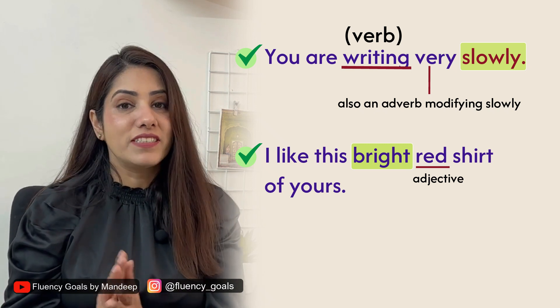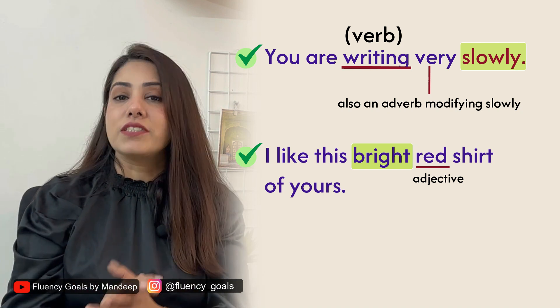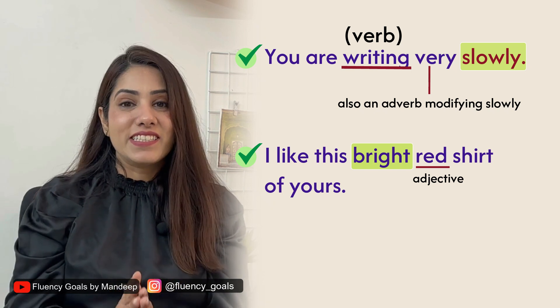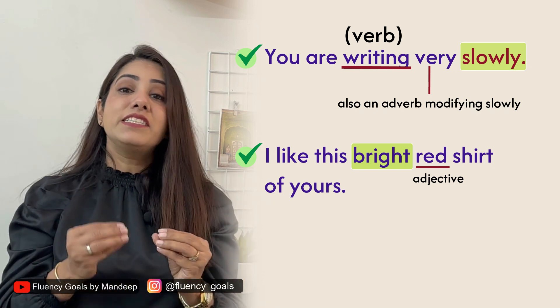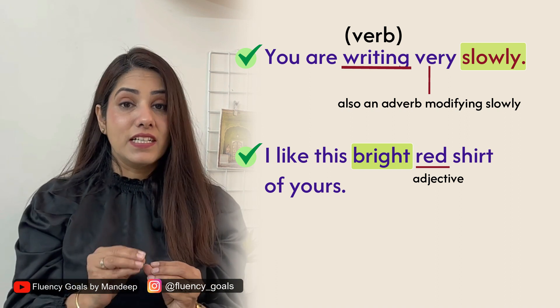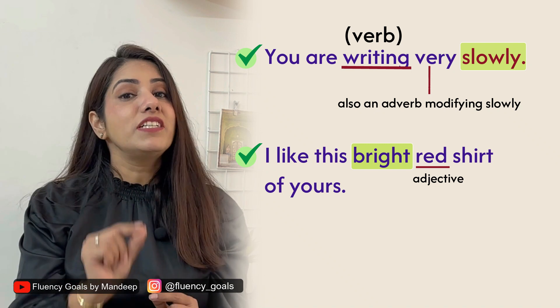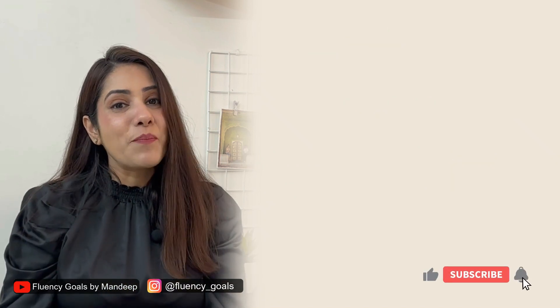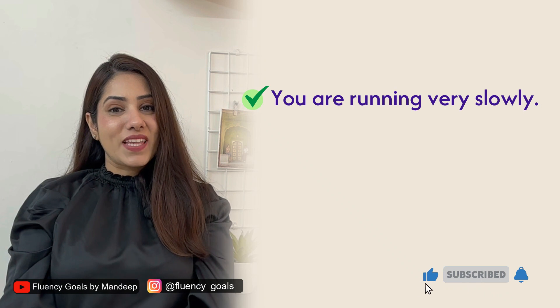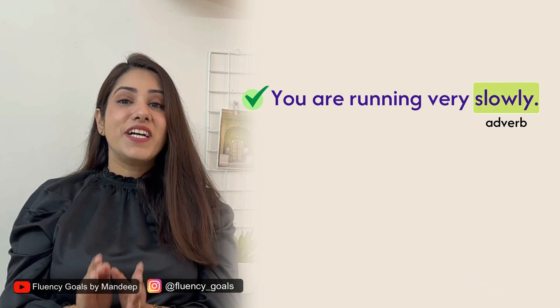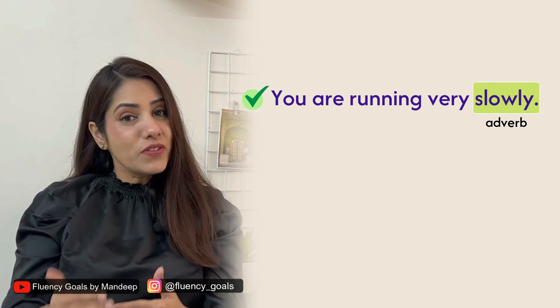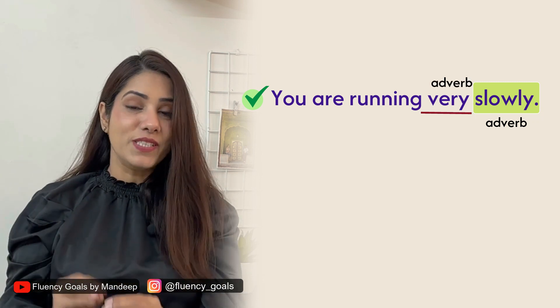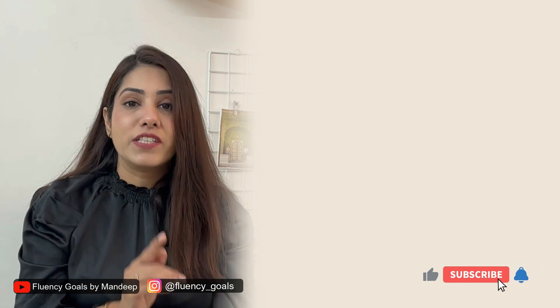Look at another example: 'I like this bright red shirt of yours.' Here 'red' is an adjective modifying the noun 'shirt,' but 'bright' is further modifying 'red,' so 'bright' here is an adverb modifying the adjective. In 'You are running very slowly,' 'slowly' is an adverb and 'very' is further modifying 'slowly,' so 'very' is also an adverb. So adverbs can modify verbs, adjectives, or other adverbs.